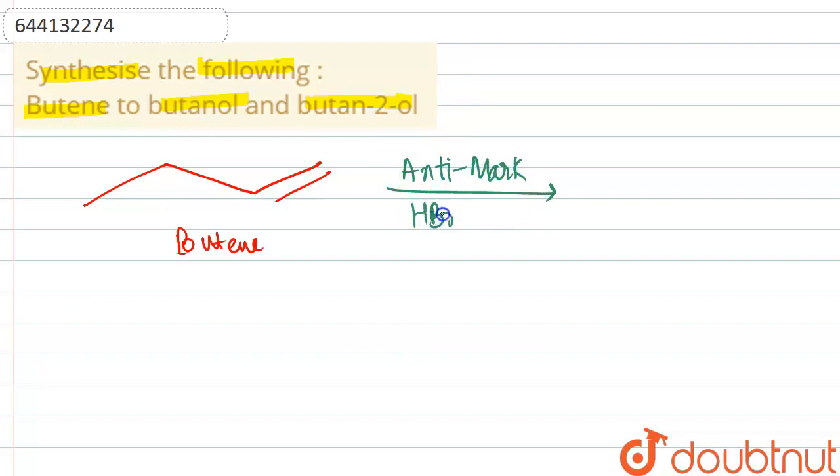In the presence of HBr plus ROOR, anti-Markovnikov's addition will happen. In this rule, the substituent is bonded to a less substituted carbon. This is what happens over here and what we would be getting in this case.